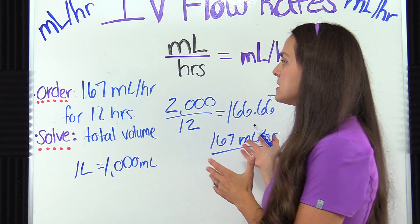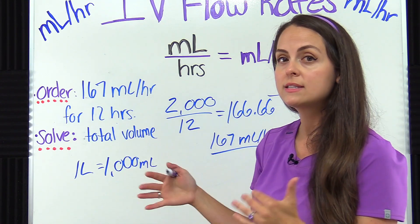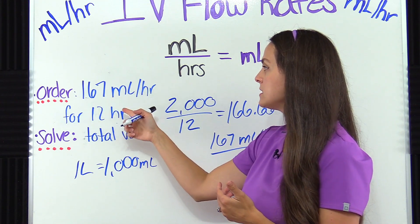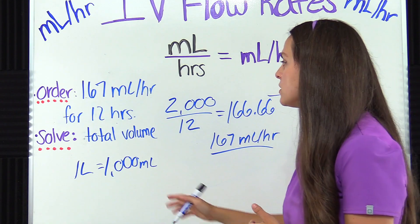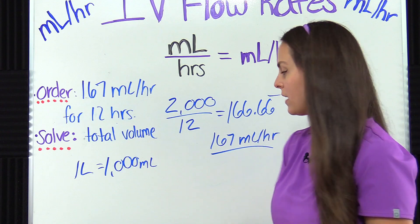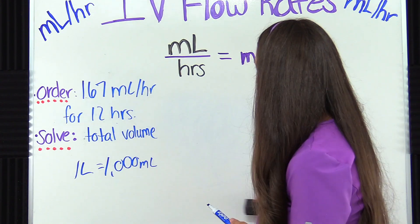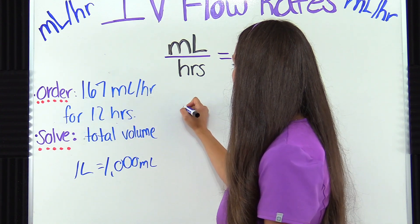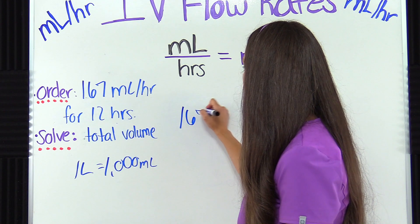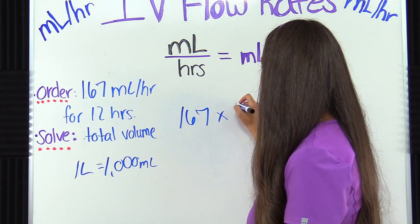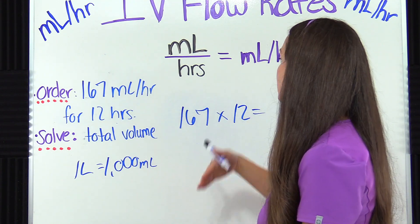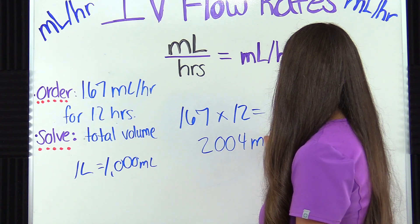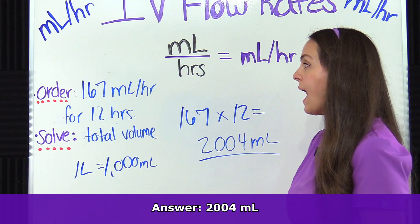Now let's look at a problem that asks you to solve for the total volume instead of the hourly rate. The physician wants a patient to have an infusion running at 167 milliliters per hour for 12 hours — what is the total volume that's going to be given? Instead of dividing, you're going to multiply. Take the volume per hour, which is 167, and multiply it by 12, because they receive that every hour for 12 hours. 167 times 12 gives you 2,004 milliliters — that is the total volume the patient will receive at this hourly rate.